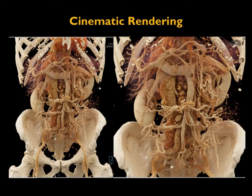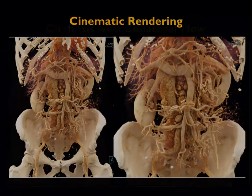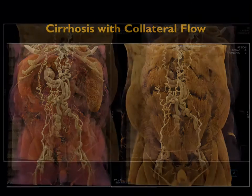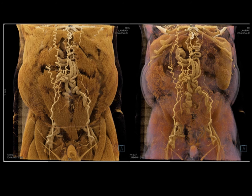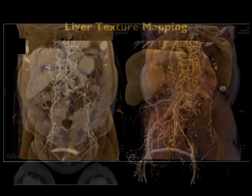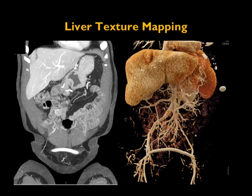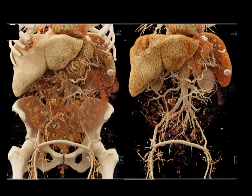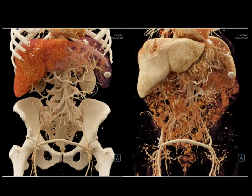Here is a patient with a neuroendocrine tumor — a neurogenic tumor with extensive adenopathy which is vascular — and there is the 3D map impressively showing the vessels and their relationship to the nodes. In a patient with cirrhosis with recanalization of the umbilical vein, look at those collaterals and the relationship of the vessels to the abdominal wall, changing the lighting models to accentuate that.